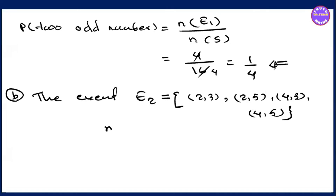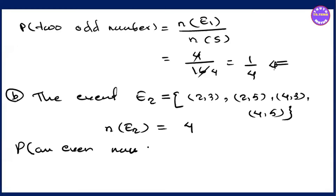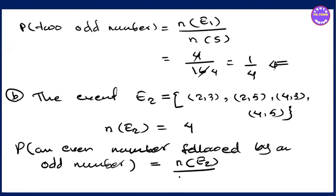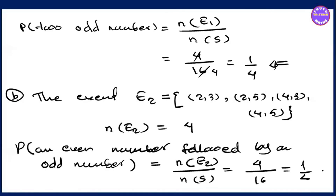n of E2 equals: an even number followed by an odd number. Even number followed by an odd number. N of E2 divided by N of S — we have to write that forward.